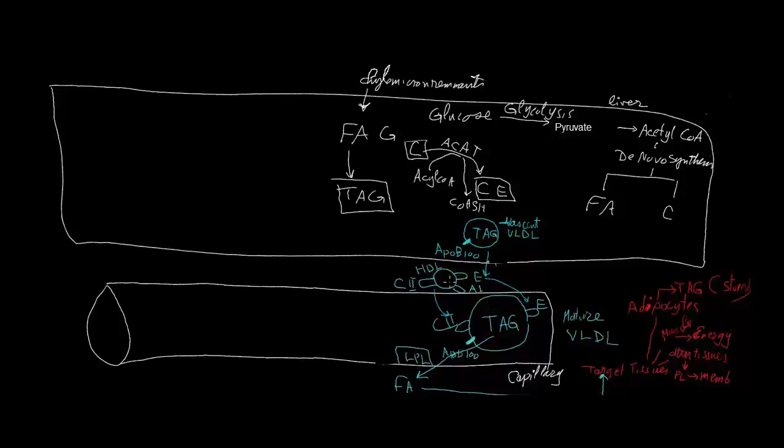HDL interacts with high-density lipoproteins with their apoproteins on their surface, the integral marker. In addition they have apoC2 and apoE, so they donate their apoE and apoC2 to the nascently produced VLDL, so this converts the nascently produced VLDL into mature VLDL.